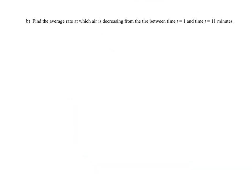Part B: Find the average rate at which the air is decreasing from the tire between t equals 1 and t equals 11 minutes. The key word that jumps out is average. I am immediately setting up 1 over 11 minus 1 from 1 to 11. You just have to read. Who are you averaging? Average the rate.